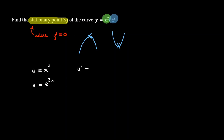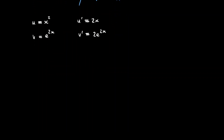We're going to differentiate both of these. So u prime is equal to 2x, and v prime is equal to 2e to the 2x. Then we want to remember our product rule: v du/dx plus u dv/dx. So we substitute our values: v is e to the 2x, u prime is 2x, u is x squared, and v prime is 2e to the power of 2x.